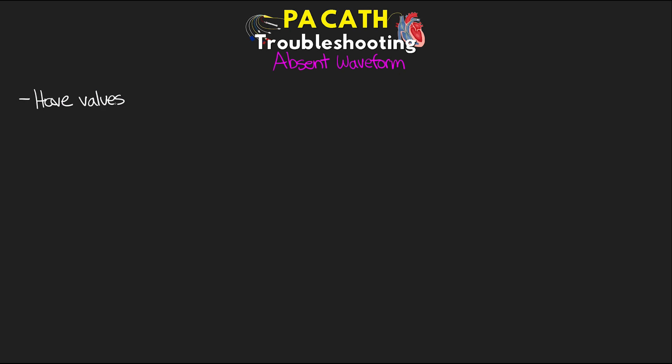Next troubleshooting is if we have an absent waveform. If you're not getting a waveform, there are a couple of things to check. If you have values for your PA pressure, you might need to try adjusting the scale on your monitor, because if the pressure goes too high or too low they can drop out of the current scale. Ideally, we want our PA catheter to be at the 40 millimeters of mercury scale, but things can sometimes end up out of this range.